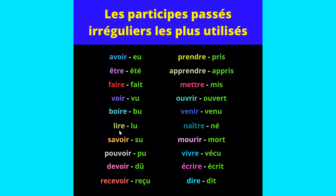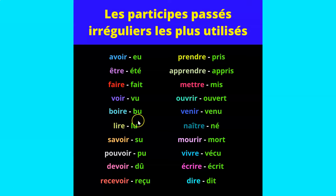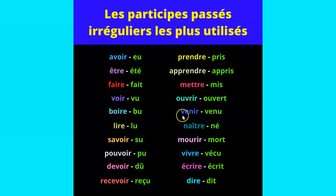For example, if you wanted to say 'I would have read the book' in le conditionnel passé, you would say j'aurais lu le livre. There are two parts: avoir in le conditionnel présent as your helping verb, and then lire in its past participle form, which is lu. Watch out for verbs like mourir and venir, which take être instead of avoir as their helping verb.